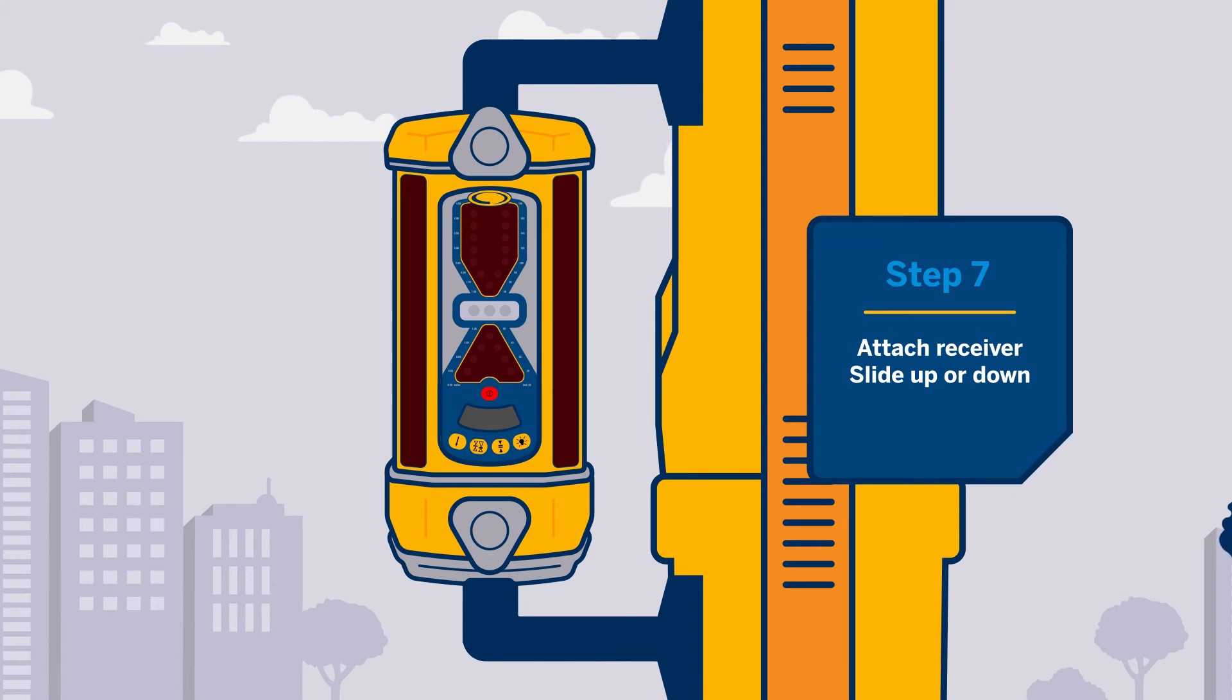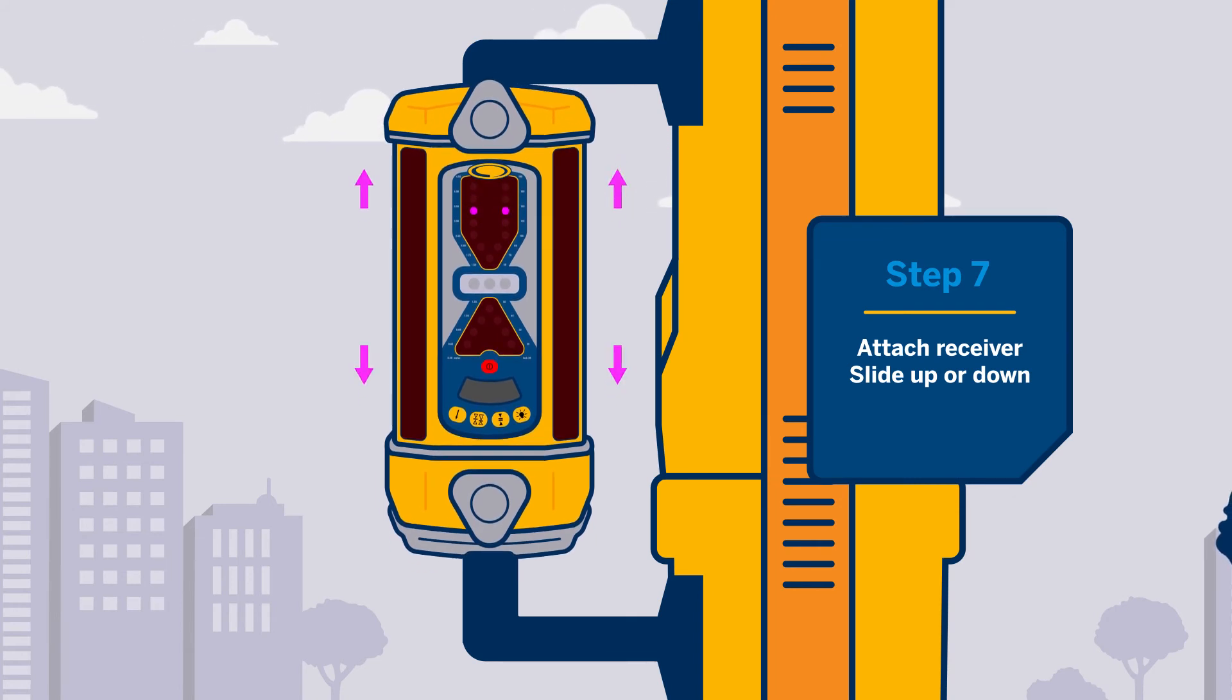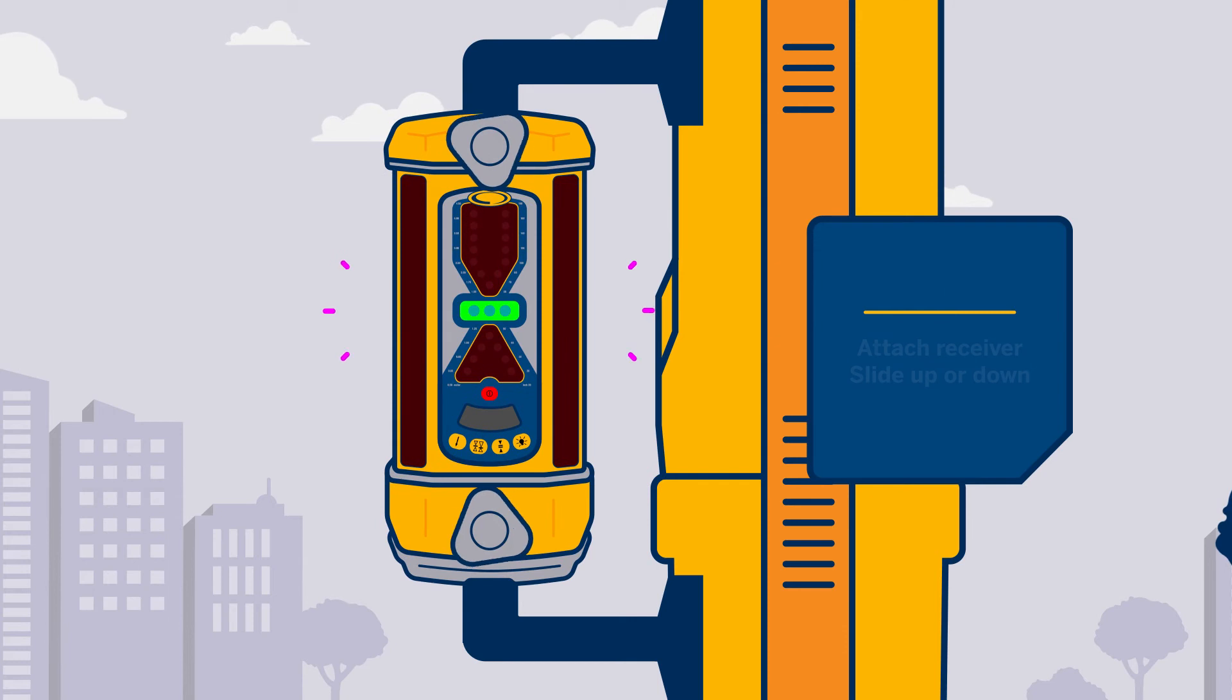Adjust the dipper arm to plumb. Then slide the receiver up or down until you get a solid green on-grade display.